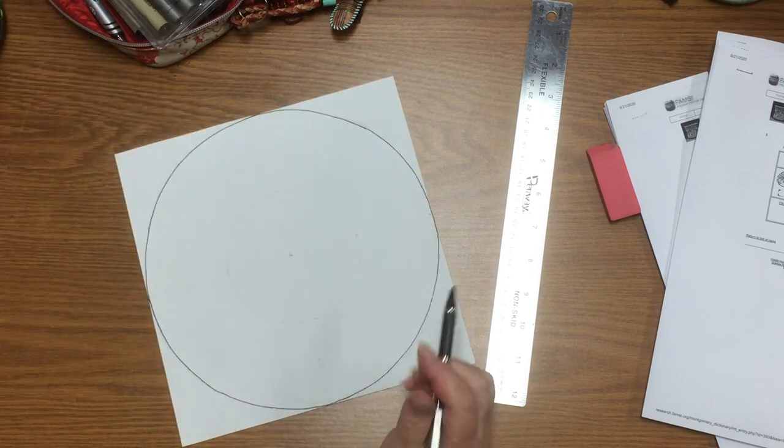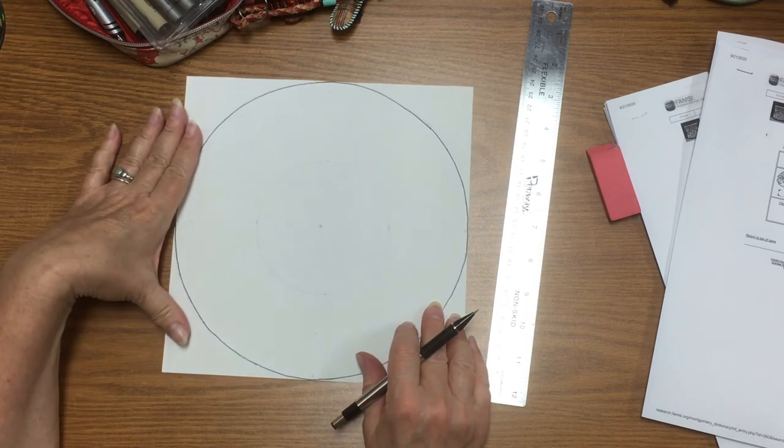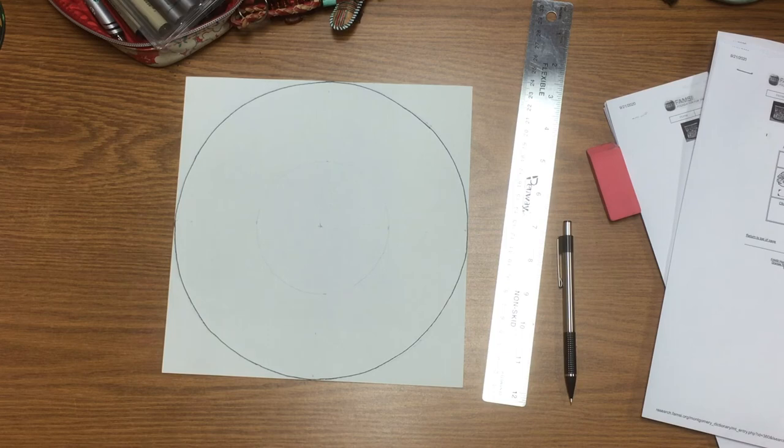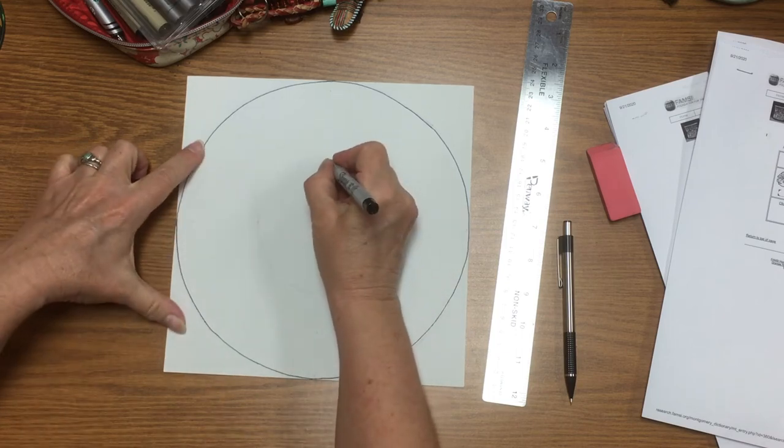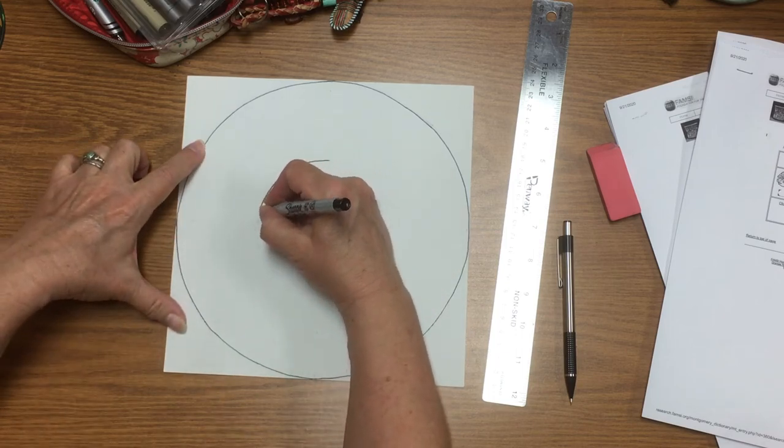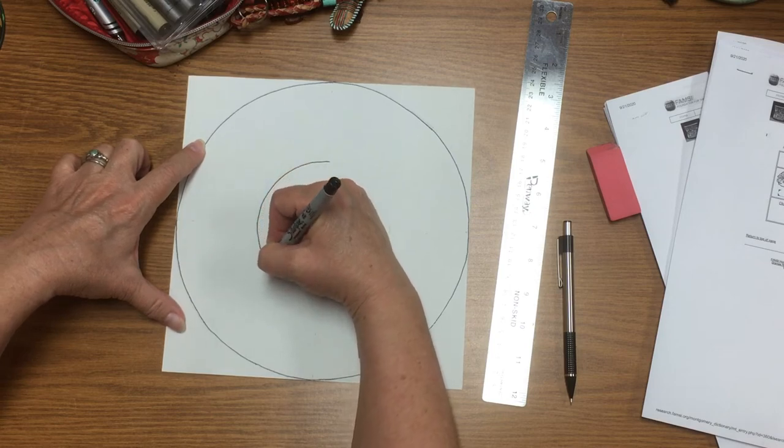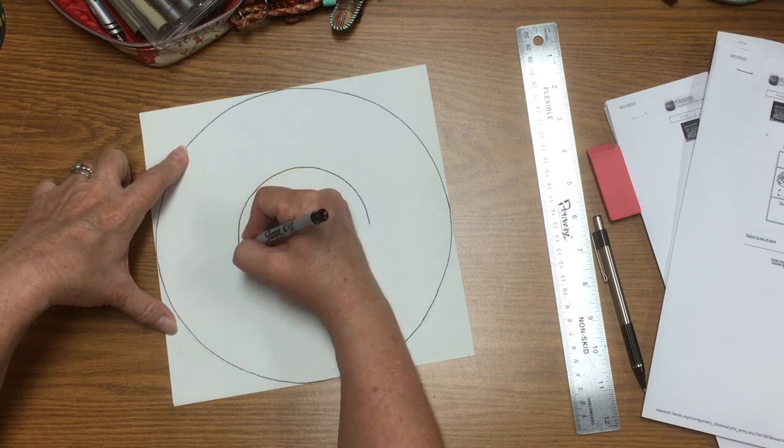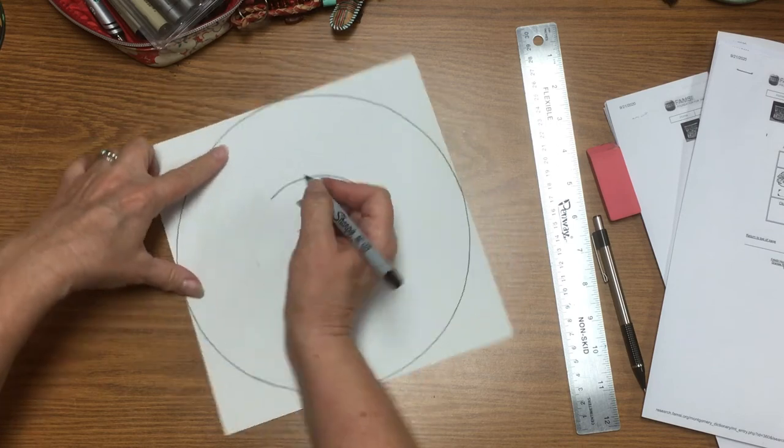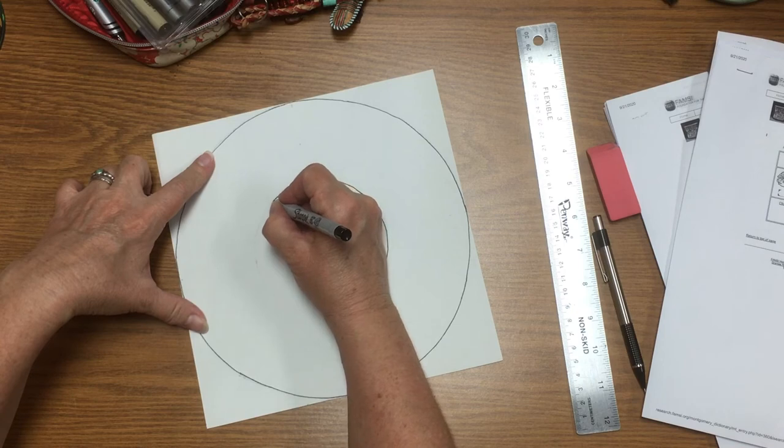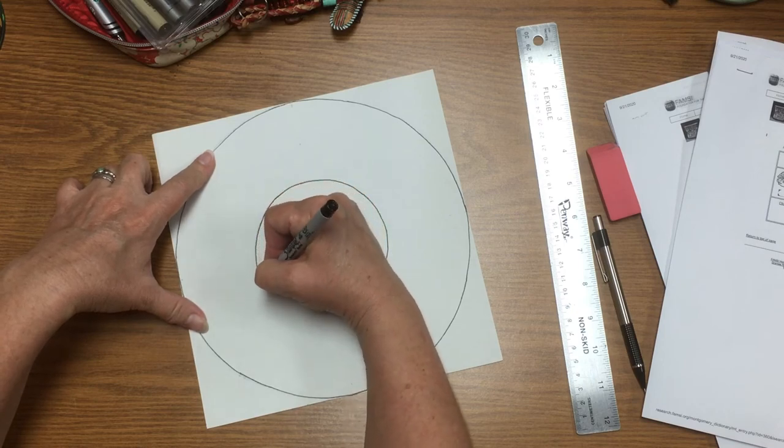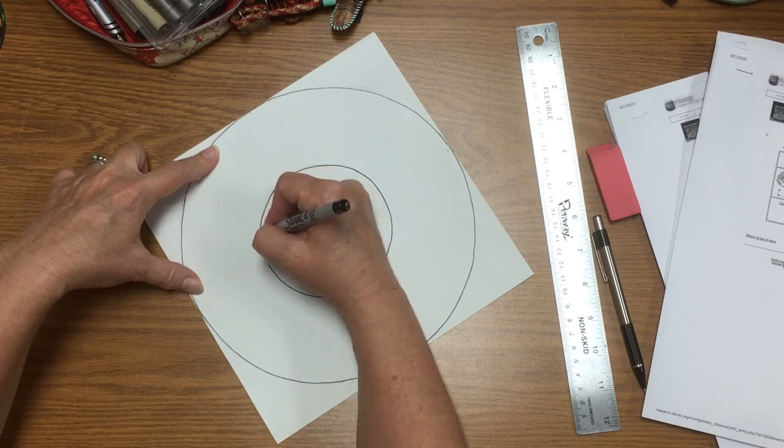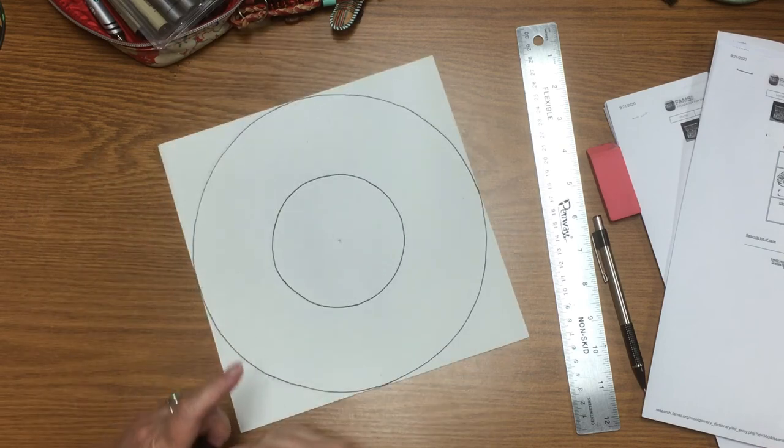And now I don't have to do any more measuring. And I'm going to trace around this circle that I just made just so you can see it in the video. But at home, you're going to want to wait to do all of the black sharpie work until after all of the drawing is done. If you mess up or change your mind about some mark, you can erase it. But once you've put that black sharpie down, you're committed.